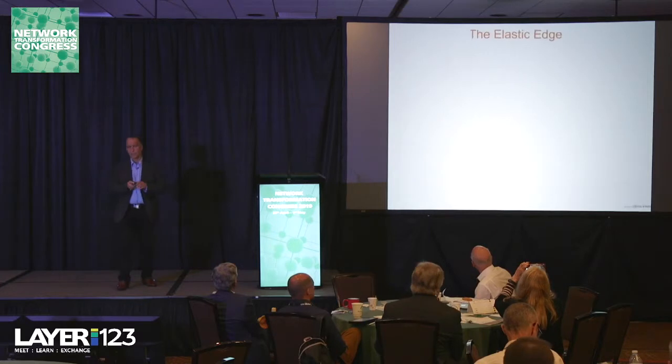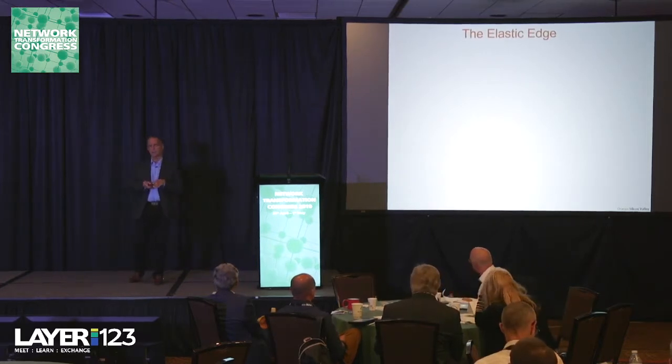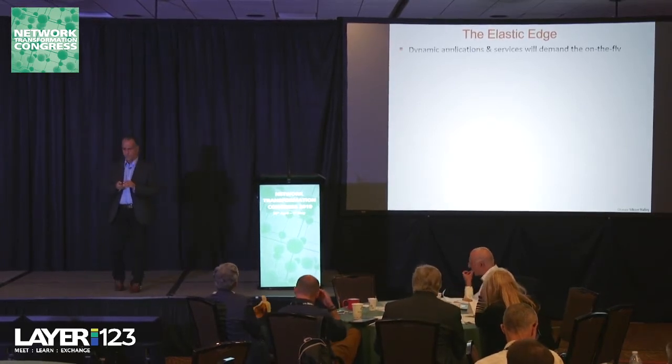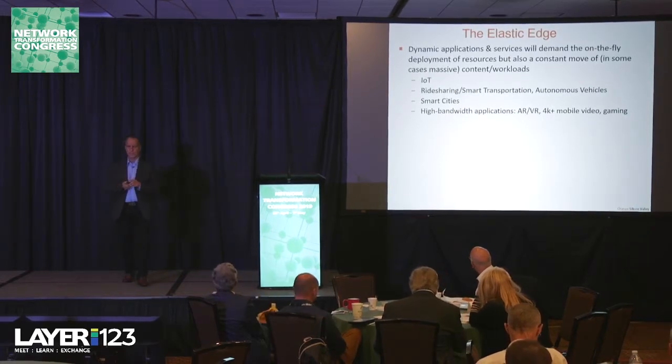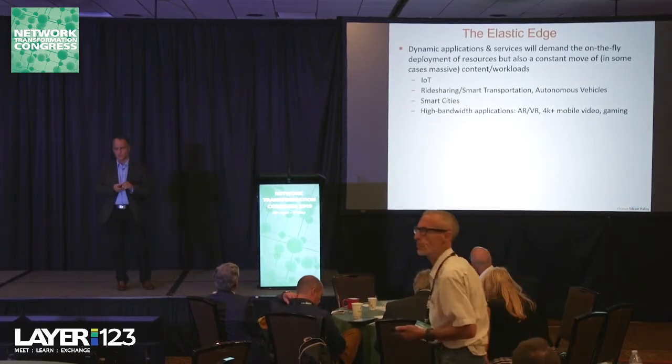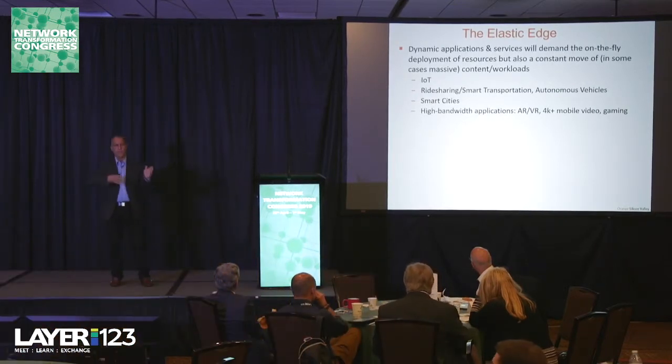The second concept is the elastic edge. We know about the elastic cloud, but obviously there's going to be a need for the elastic edge. Here we're talking about dynamic application services that demand on-the-fly deployment of resources, and applications that may want to move from one site to another in terms of content and workloads. IoT is one great example, along with smart transportation, ride-sharing like Lyft and Uber, and autonomous vehicles.